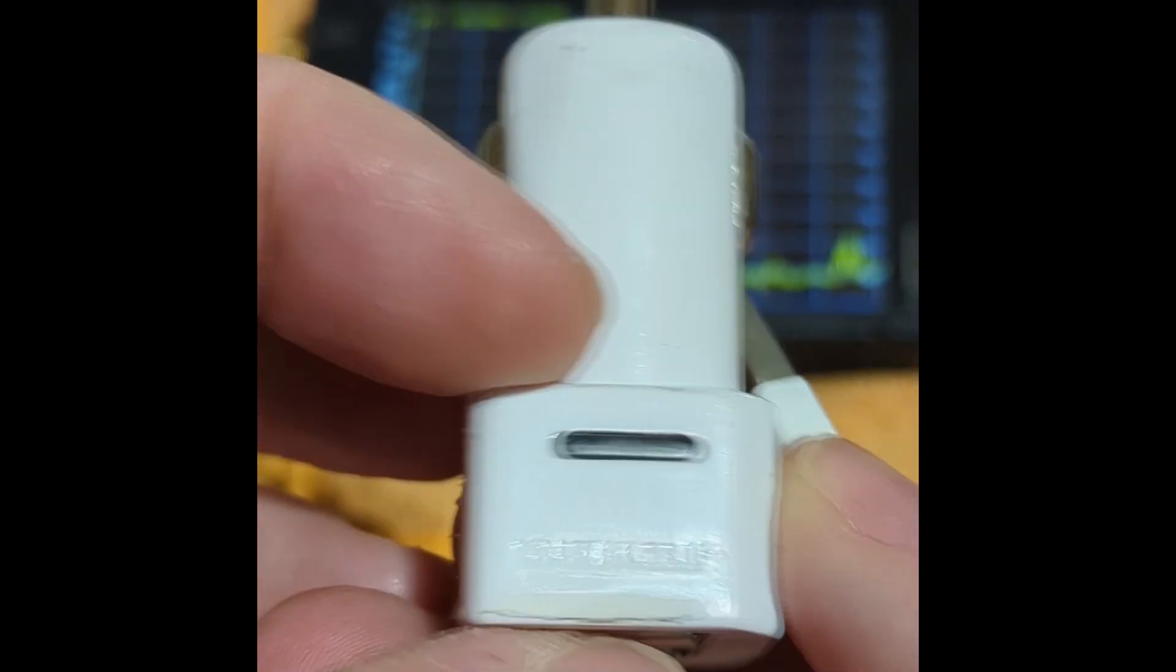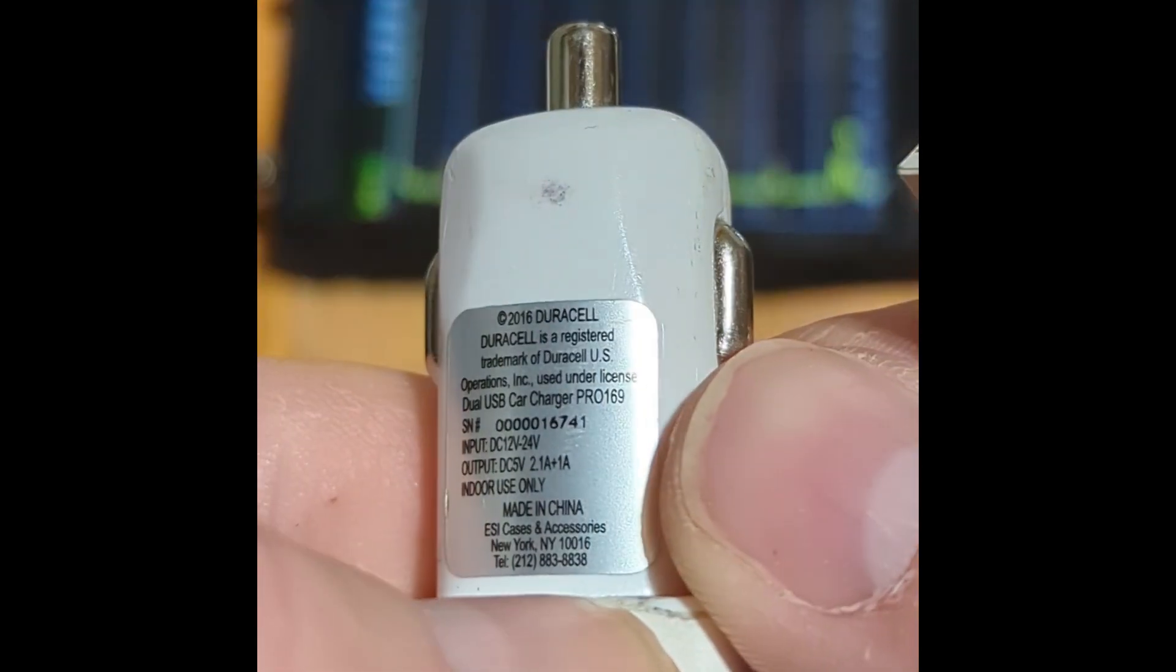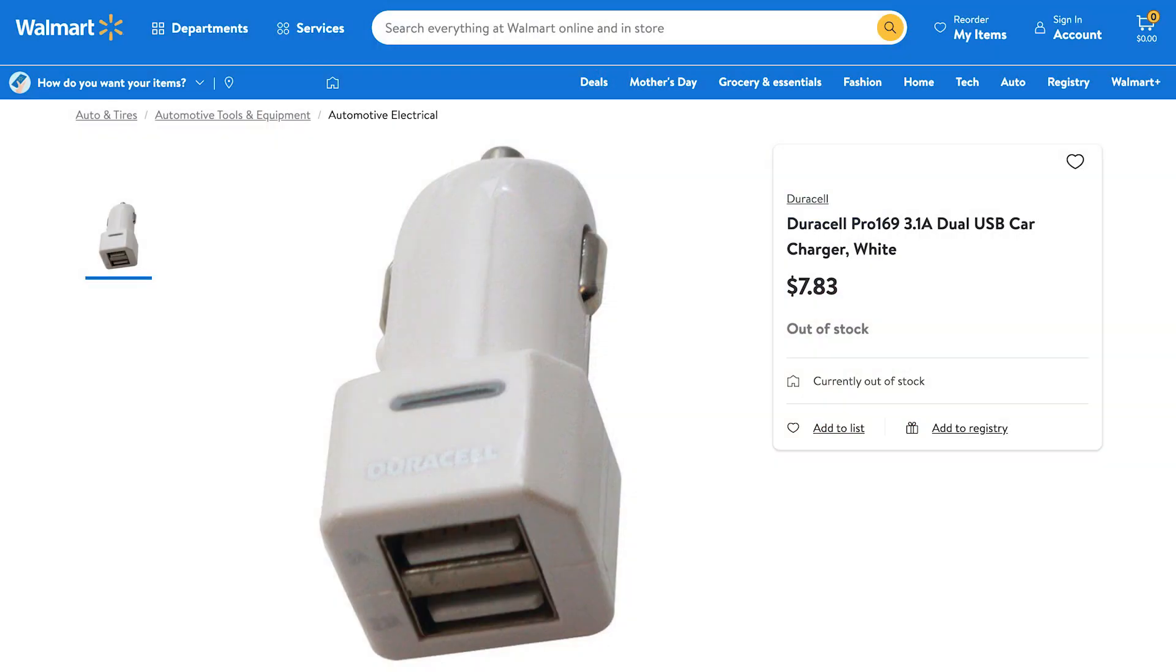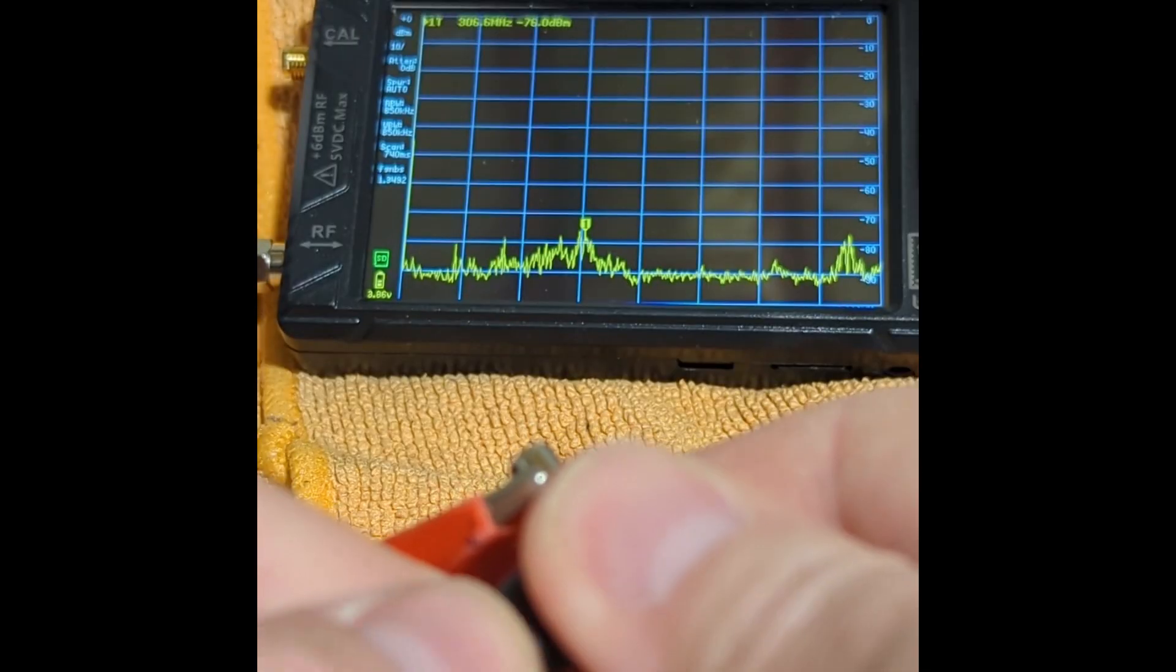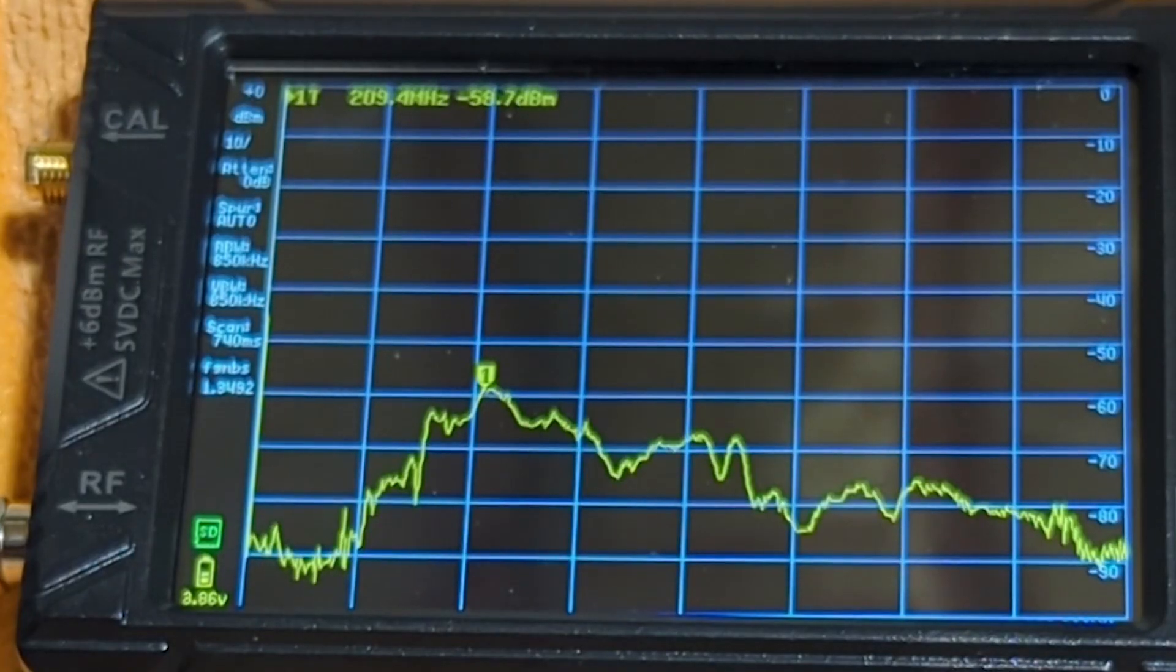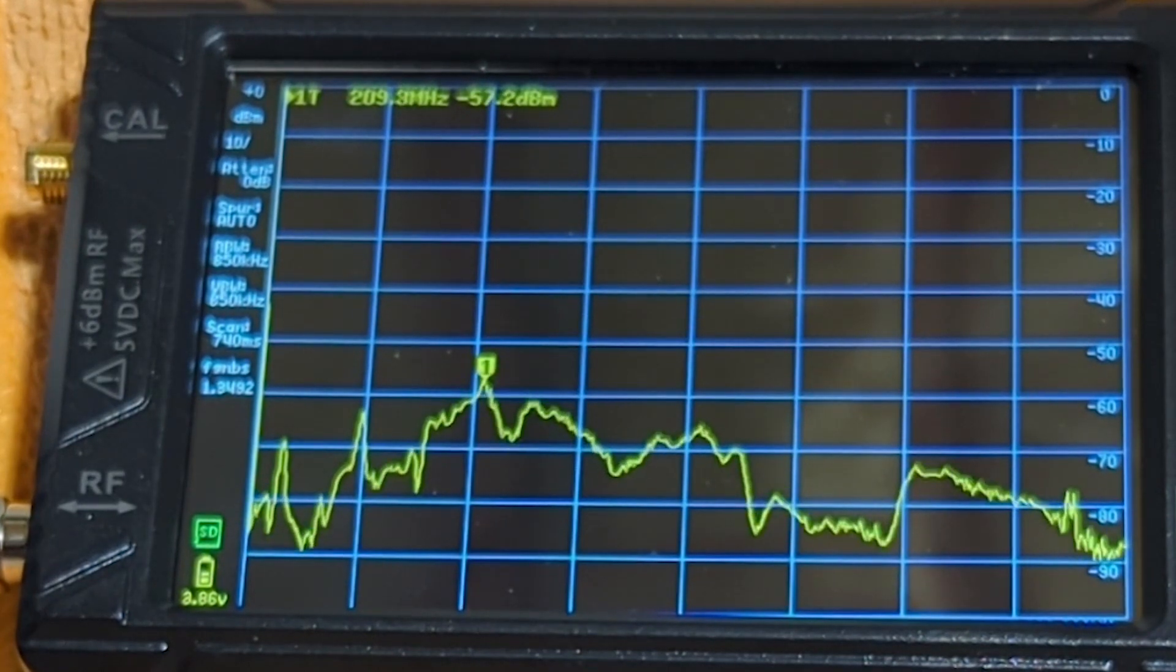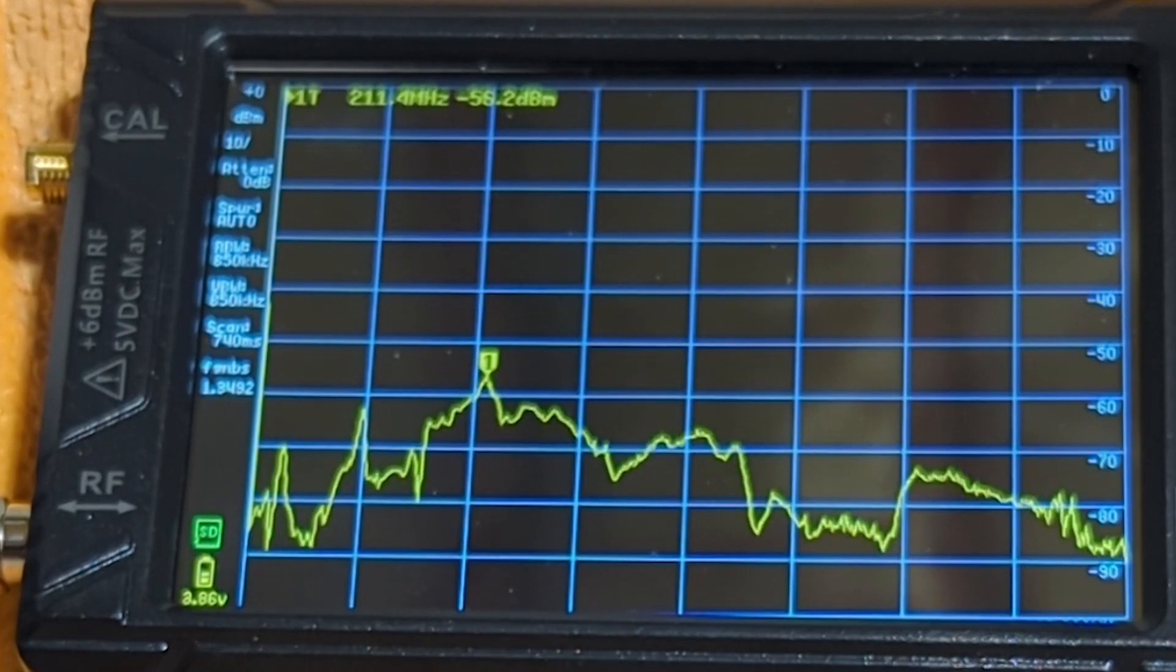Finally, we're going to look at this Duracell Pro 169. It used to be sold at Walmart for $7. I've had it for a few years. We're going to power it up and whoa. This is a disaster.